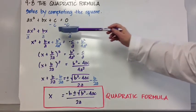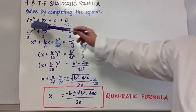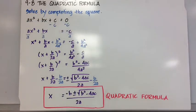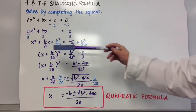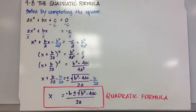So the first thing I'm going to do is subtract c from both sides of the equation, and I get ax squared plus bx equals negative c. And I want the coefficient of my x squared term to be one, so I'm going to divide everything on both sides of the equation by a, and that results in x squared plus b over ax equals negative c over a.